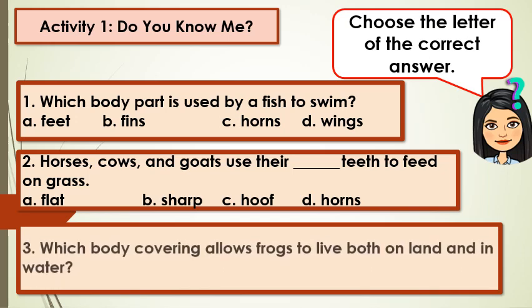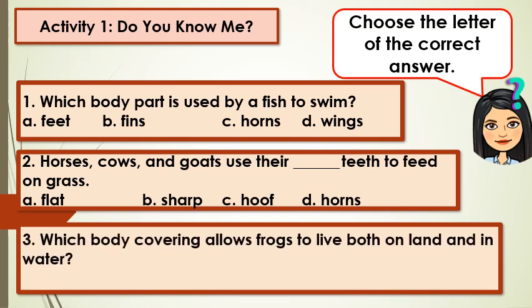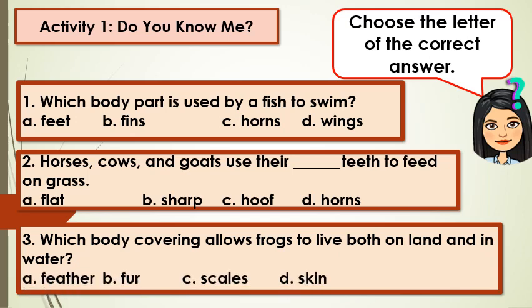Number 3: Which body covering allows frogs to live both on land and in water? A. Feather, B. Fur, C. Scales, D. Skin.